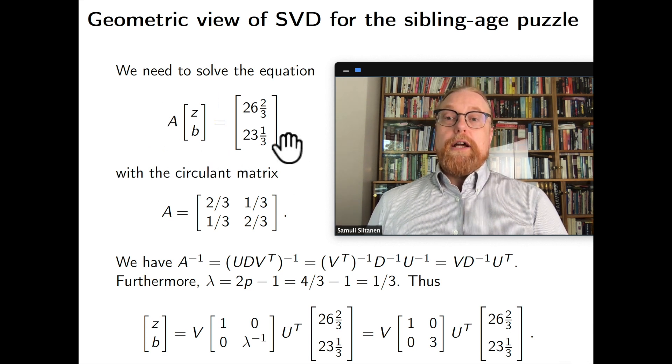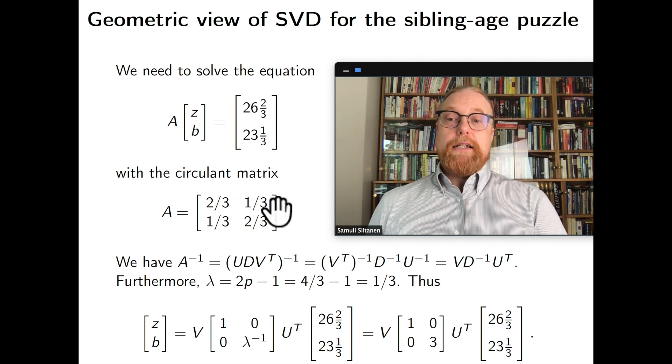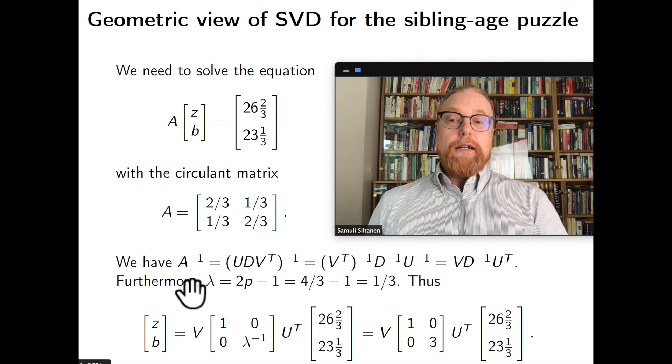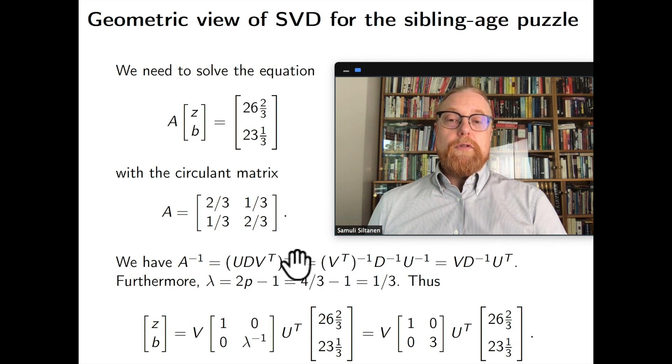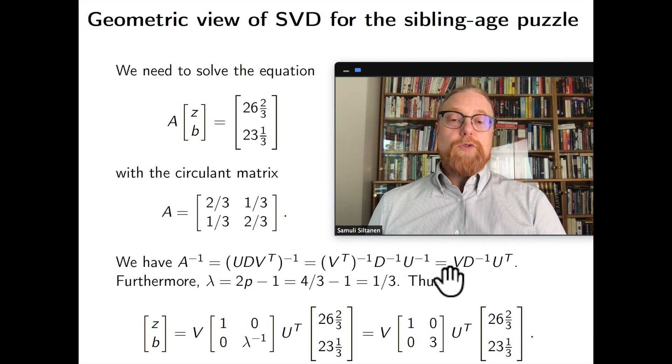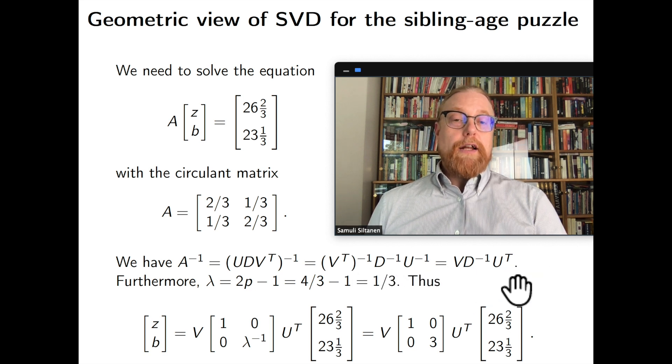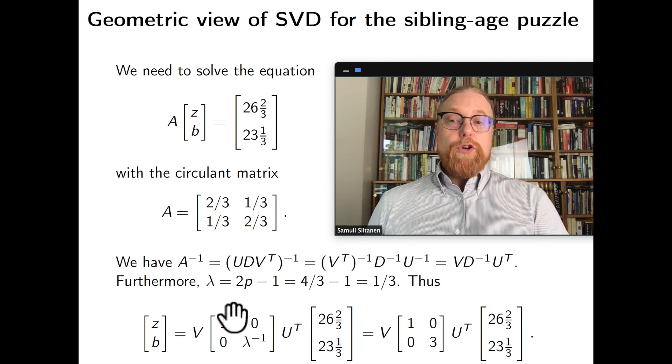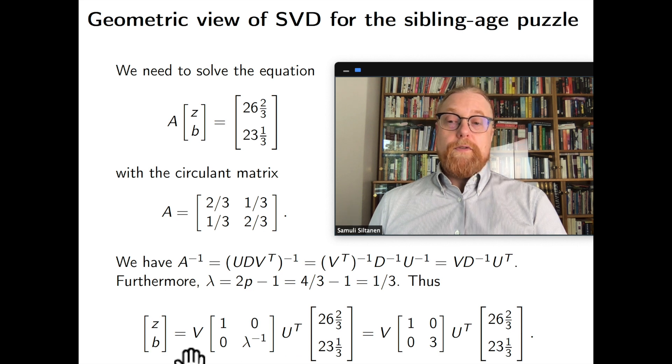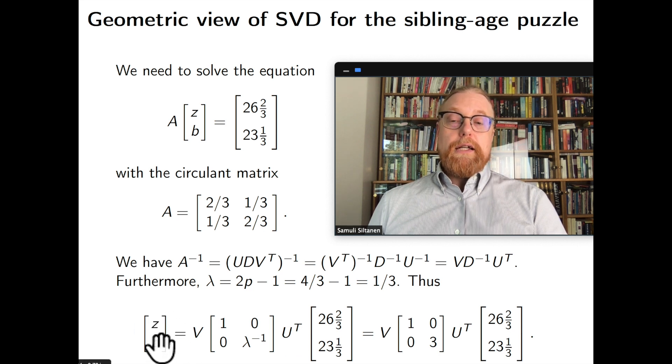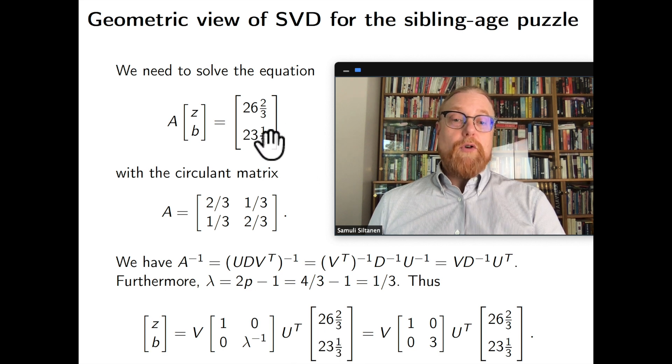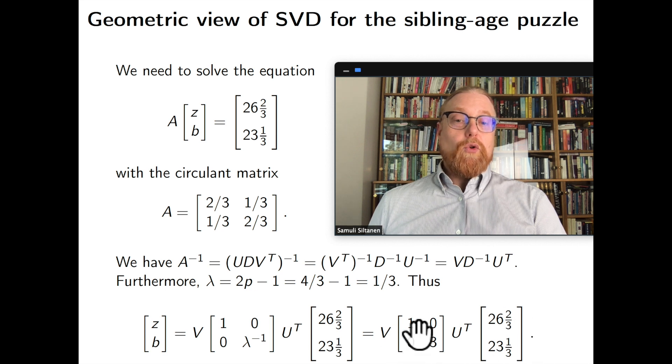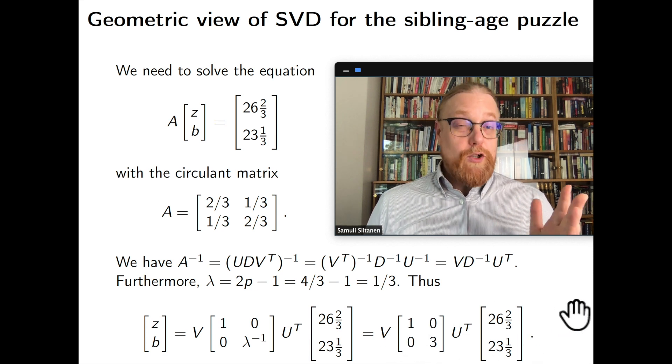And now we can use the whole thing to solve our problem with Zoe's and Bill's age. So this is our equation where A is this matrix right here. Now we can write the inverse of A using the singular value decomposition. We remove the parentheses. And according to matrix calculus, this is what we get V, D minus 1 and U transpose. And we know what is lambda. It's one third. So the solution to our problem is V times this diagonal matrix. Note that here is one over lambda. And here U transpose and here is the right hand side from our equation. So the final answer will look like this.